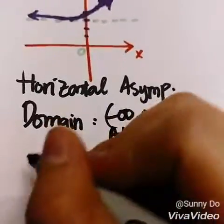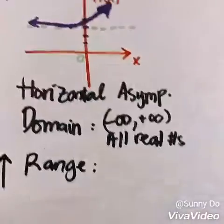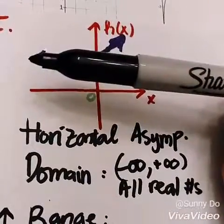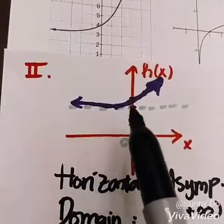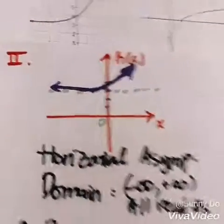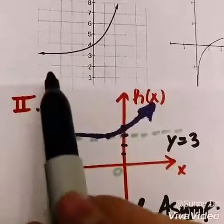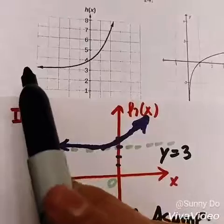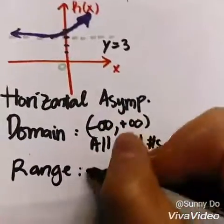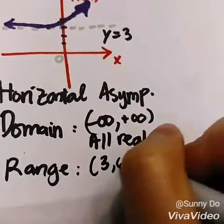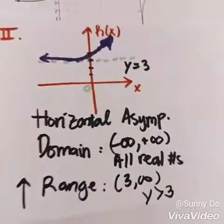The second thing they ask is range. Range goes from the bottom to the top — from the lowest to the highest. Remember, the lowest is going to be the number that the graph cannot touch, which is the y-value at positive 3. There's an imaginary line at 3 that your graph cannot go over. So it starts from positive 3 to infinity, or y is greater than positive 3.